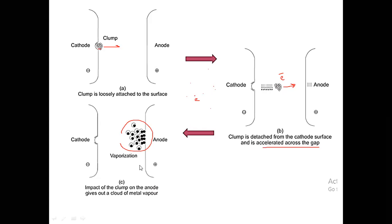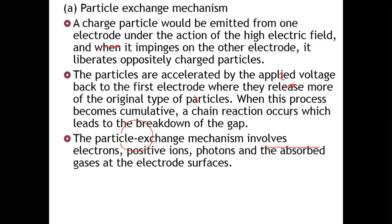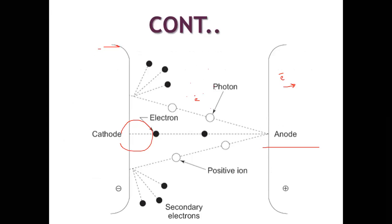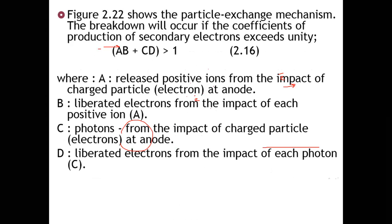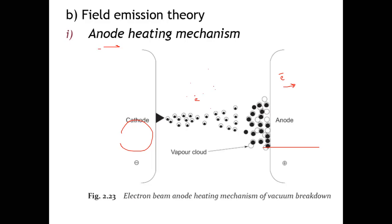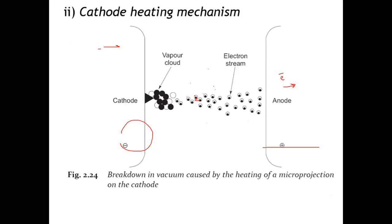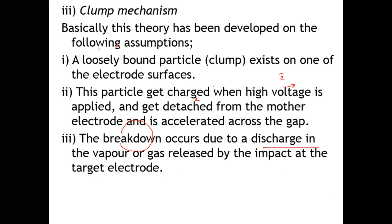To summarize, vacuum breakdown can be explained by three mechanisms. First, the particle exchange mechanism, where particles are exchanged and breakdown occurs when (a×b) + (c×d) > 1. Second, the field emission theory, which includes the anode heating mechanism and cathode heating mechanism. Third, the clump mechanism, which is only valid if a clump exists on the electrode surface — if no clump exists, this theory is not validated. That concludes the topic of vacuum breakdown.